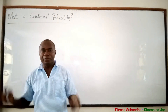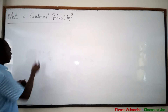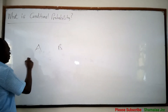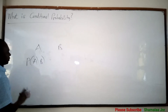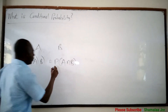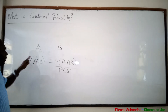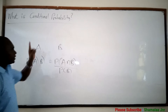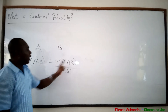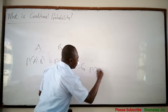When you say conditional probability of an event, what do you mean? The conditional probability of an event A given an event B, which is denoted as P(A|B), is equal to the probability of A intersection B over probability of B, for probability of B greater than 0.